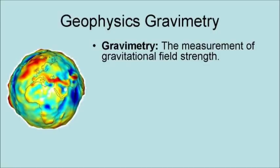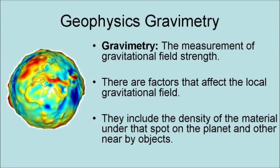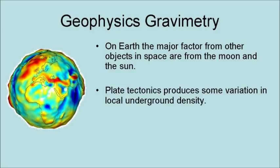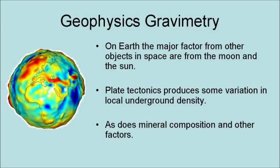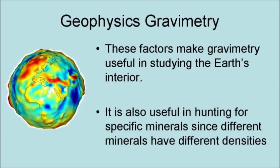Gravimetry is the measurement of gravitational field strength. There are factors that affect the local gravitational field. They include the density of the material under the spot on the planet and other nearby objects. On Earth, the major factors from other objects in space are the moon and the sun. Plate tectonics produces some variation in local underground density, as does mineral composition and other factors. These factors make gravimeters useful in studying the Earth's interior and in helping prospect for specific minerals, since different minerals have different densities.